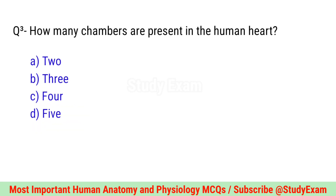Question number three. How many chambers are present in the human heart? Correct option is C. Four.